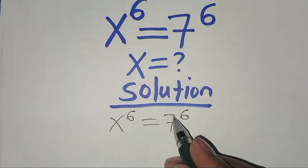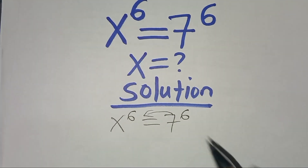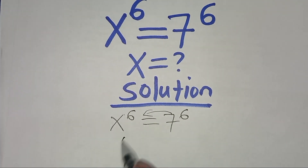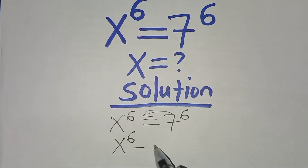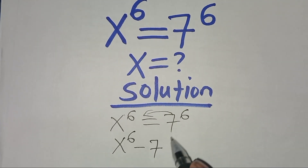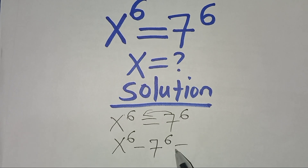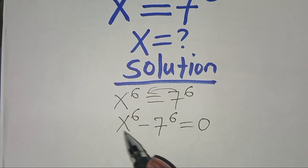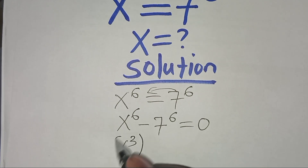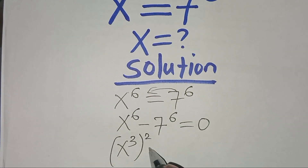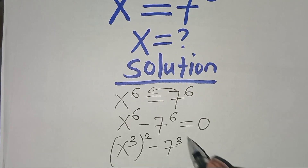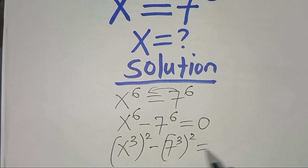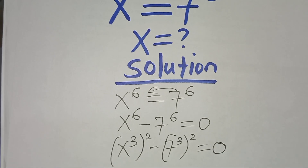Let's take 7 to the power 6 to the left hand side, so that we'll have x to the power 6 subtract 7 to the power 6, this is equal to 0. We can express x to the power 6 as x to the power 3 squared, subtract 7 to the power 3 squared, this is equal to 0.